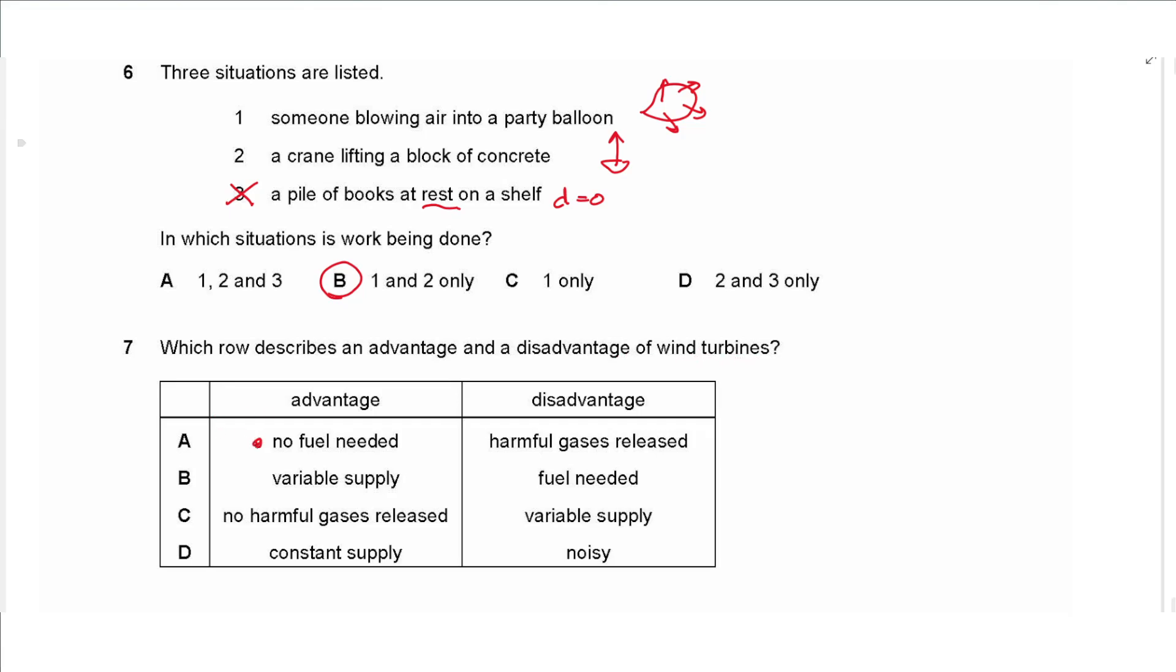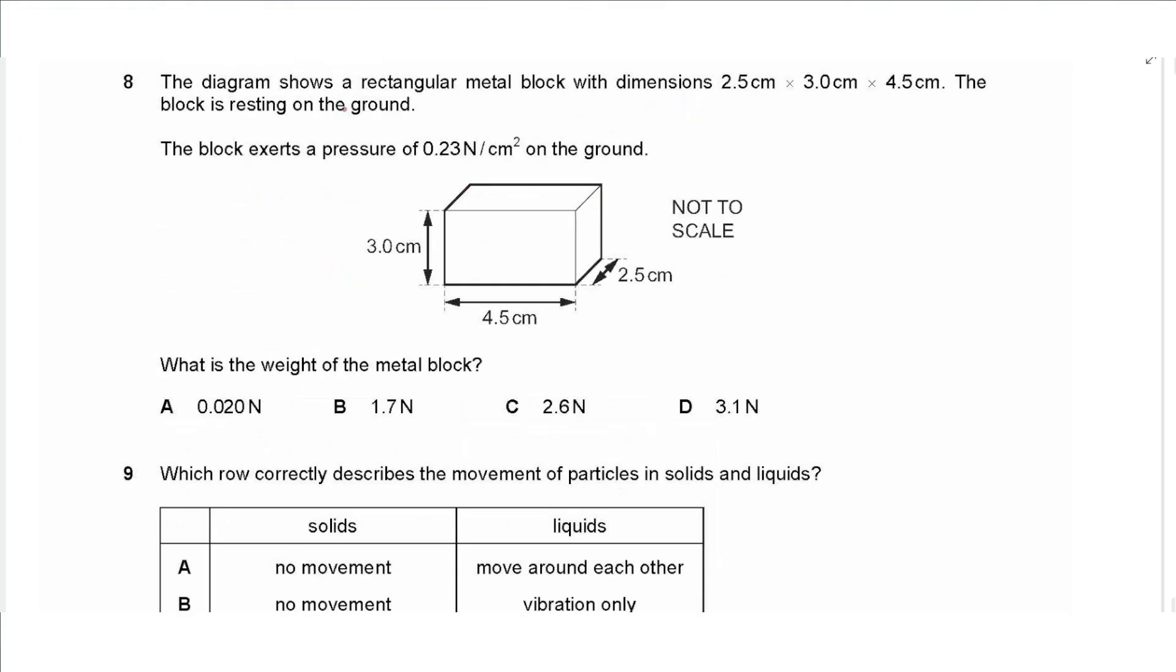Question seven says which row describes an advantage and a disadvantage of wind turbines. So no fuel needed, that's an advantage. Variable supply, that's not an advantage. No harmful gas is released, that's an advantage. Constant supply, it is not constant in wind turbines, it depends on weather and daytime and location. For disadvantages, harmful gas is released, they are not released in a wind turbine. Fuel needed, no it's not needed. Variable supply, that's a disadvantage and it's noisy. So the common answer is C.